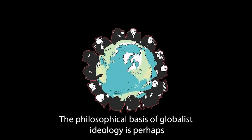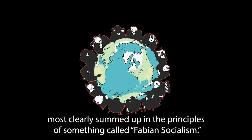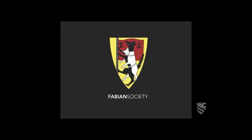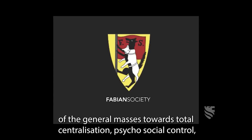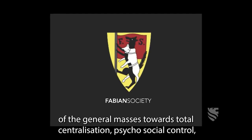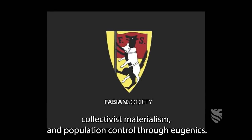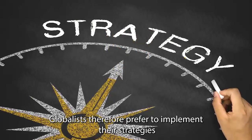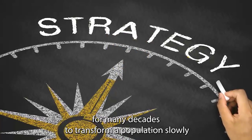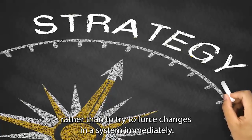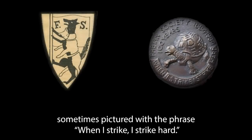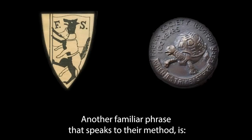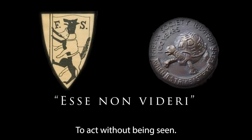The philosophical basis of globalist ideology is perhaps most clearly summed up in the principles of Fabian Socialism — a system founded in 1884 that promotes the subversive and deliberate manipulation of the general masses towards total centralization, psychosocial control, collectivist materialism, and population control through eugenics. Globalists therefore prefer to implement their strategies over many decades to transform a population slowly. Their symbol is a coat of arms showing a wolf in sheep's clothing, sometimes pictured with the phrase 'when I strike, I strike hard.' Another familiar phrase that speaks to their method is 'to act without being seen.'